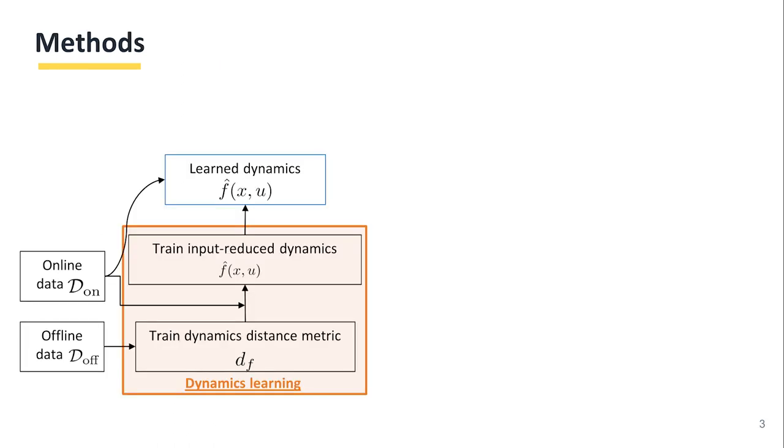Our method has three parts. First is dynamics learning. By learning distance pseudo-metrics from offline data, we reduce the input space for a trained dynamics model, resulting in enhanced OOD generalization.